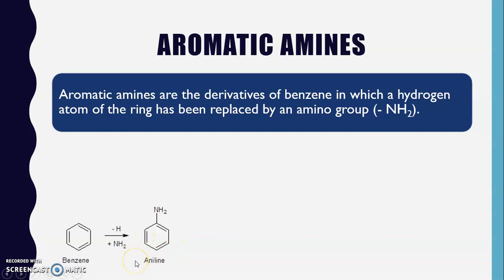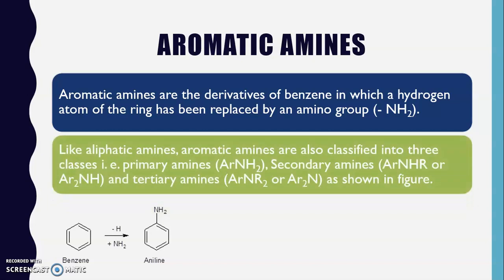Whatever properties the aromatic amines have, they are studied by considering aniline as a prototype example. Just when the hydrogen atom of benzene is replaced by NH2, we get aniline. Now, like aliphatic amines, which are of three types — primary amine, secondary amine, and tertiary amine — aromatic amines are also classified into three classes: primary amine, secondary amine, and tertiary amine.